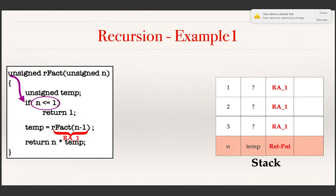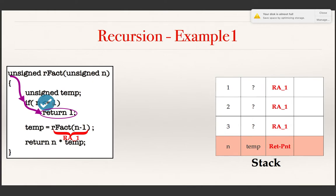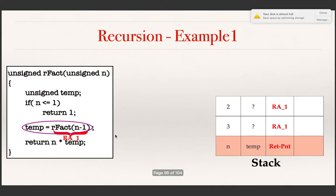The execution progresses and now it comes to the if statement. n in the current instance is 1, and 1 is less than or equal to 1, so the condition evaluates to true. The control comes to the return statement. When this return statement is executed, this instance will be killed and removed from the stack, and the control comes back to the topmost remaining instance at the statement indicated by RA1.